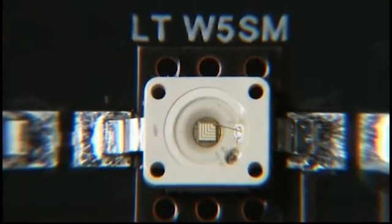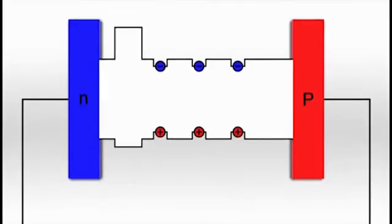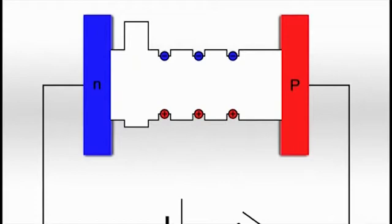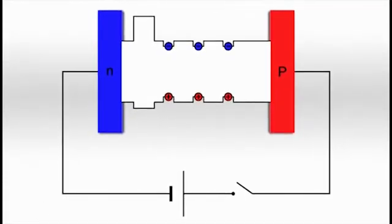The heart of the LED, the chip, is set up by various semiconductor layers, including the light-emitting PN junction. As voltage is applied to the diode, current flows.